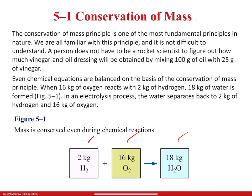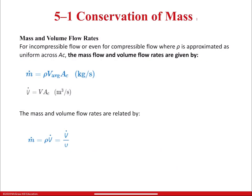A good example: you have two kilograms of H₂ and 16 kilograms of O₂, and at the end you have 18 kilograms of water. For incompressible flow or even compressible flow where density is approximated as uniform across the cross-sectional area, the mass flow and volume flow rates are given by well-known equations. The mass flow rate and volume flow rate are related, and if combined, they give another useful equation that is very important for analysis — these were introduced in chapter number two.